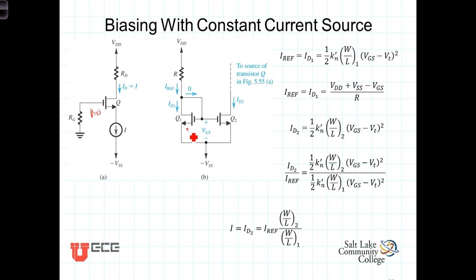You'll notice that on Q1 here, the drain and the gate are tied together. That, of course, brings it into saturation because VDS is the same as VGS and gives you an overdrive voltage equivalent to the threshold voltage of the transistor.